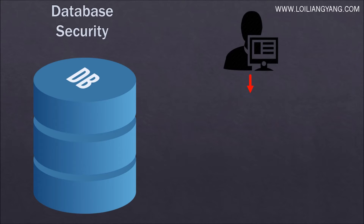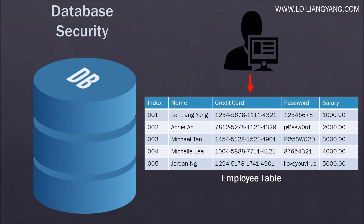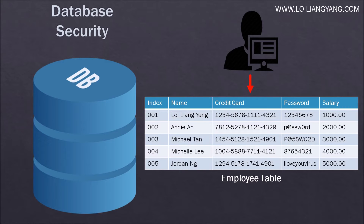For example, a hacker gains access to the database system and queries the employee table. If there are no security mechanisms in place, he would be able to see all the information in the employee table, including credit card number, salary, password, and the likes. Databases are the best place for hackers to target because the data are highly structured and organized. Furthermore, sending a SQL query is extremely simple and straightforward, making the attack much quicker.